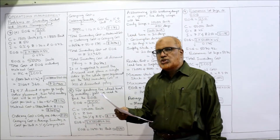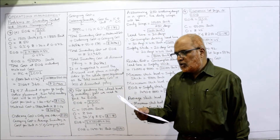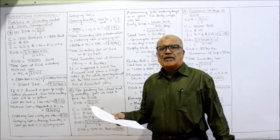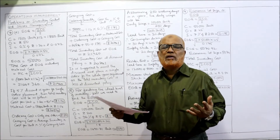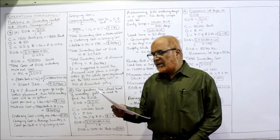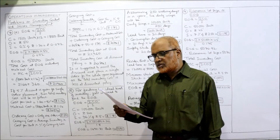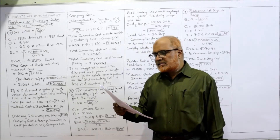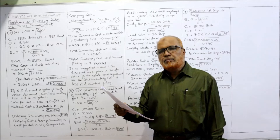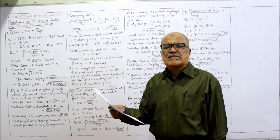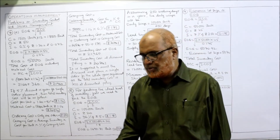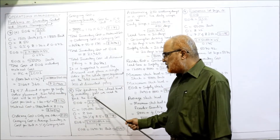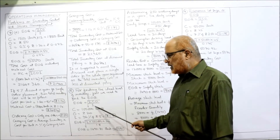Now problem number 8: the following are the details of material used in a hospital. As a store manager, how do you plan to arrange the material — what should be the ideal level of inventory? We have to find the EOQ and the different stock levels. First we need to calculate EOQ using the formula 2CO by C.